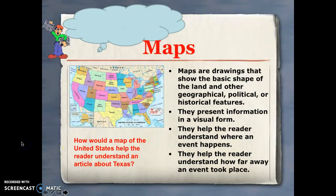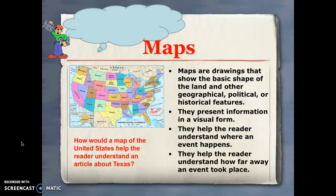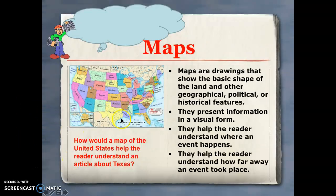Another text feature we use are maps. Maps are drawings that show the shape of land and geographical, political, or historical features. They are a visual form that helps us understand where events take place or where they happened. Maps can also show us how far away an event is from where we are located.